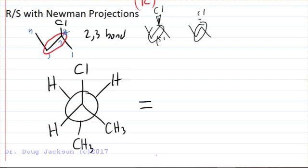Let's have a look at this Newman and see if we can't figure out what's going on. The first thing I want to do is find my chiral center, which is the front carbon here. There's my chiral center bonded to four different things.